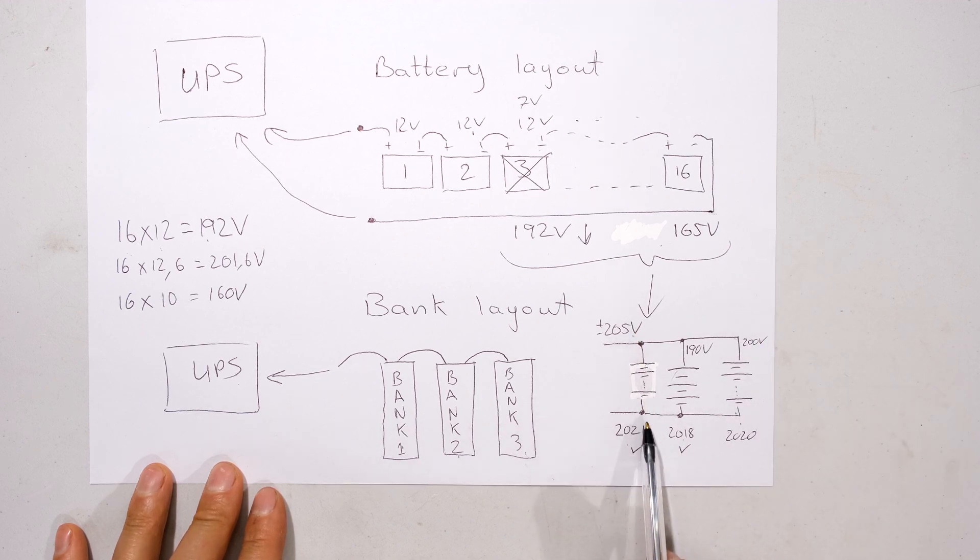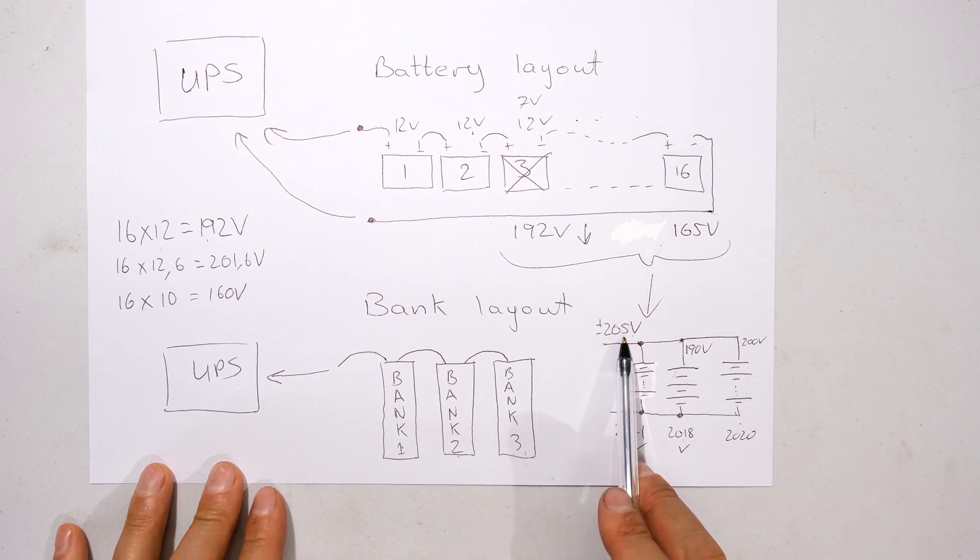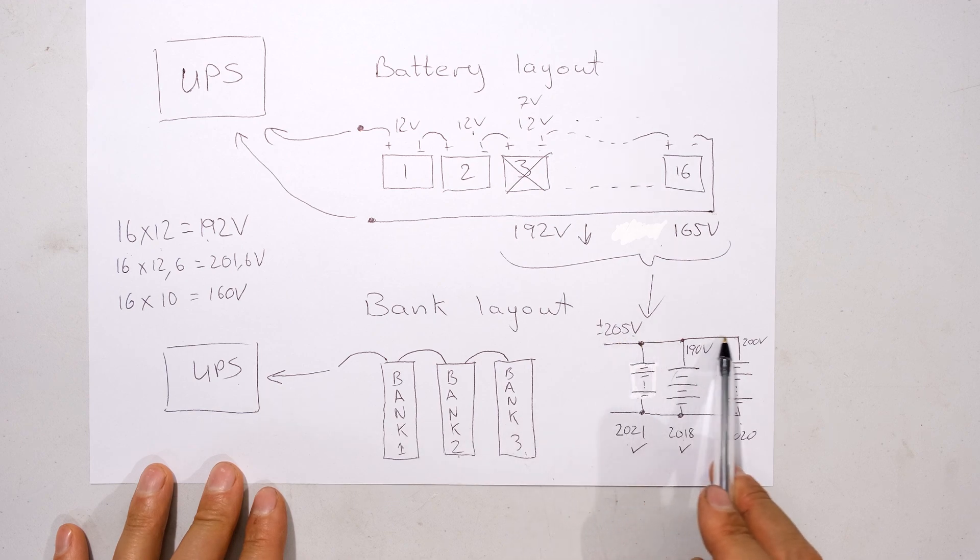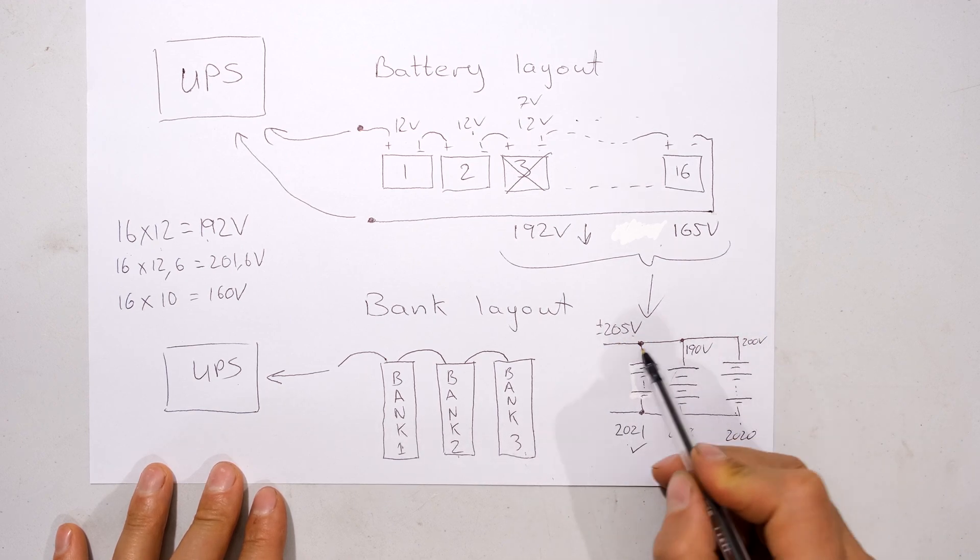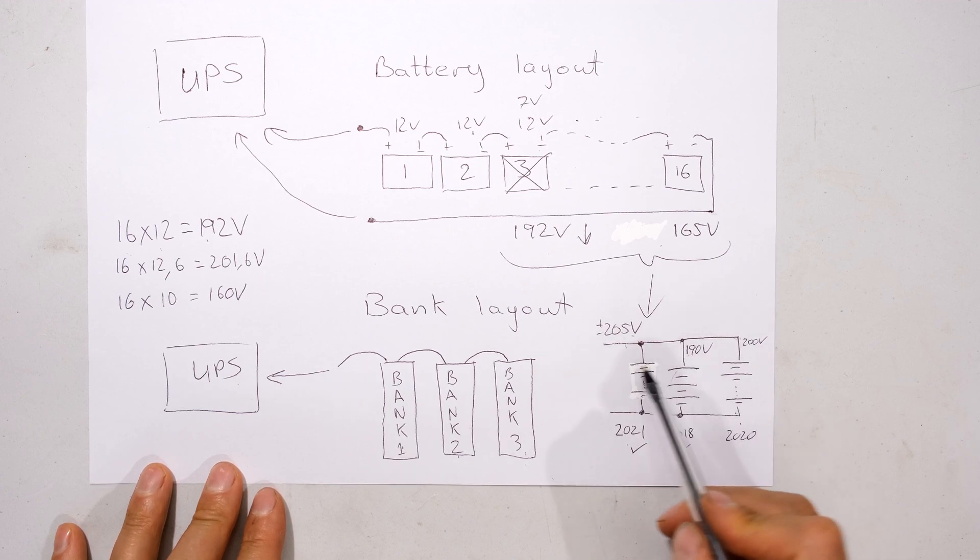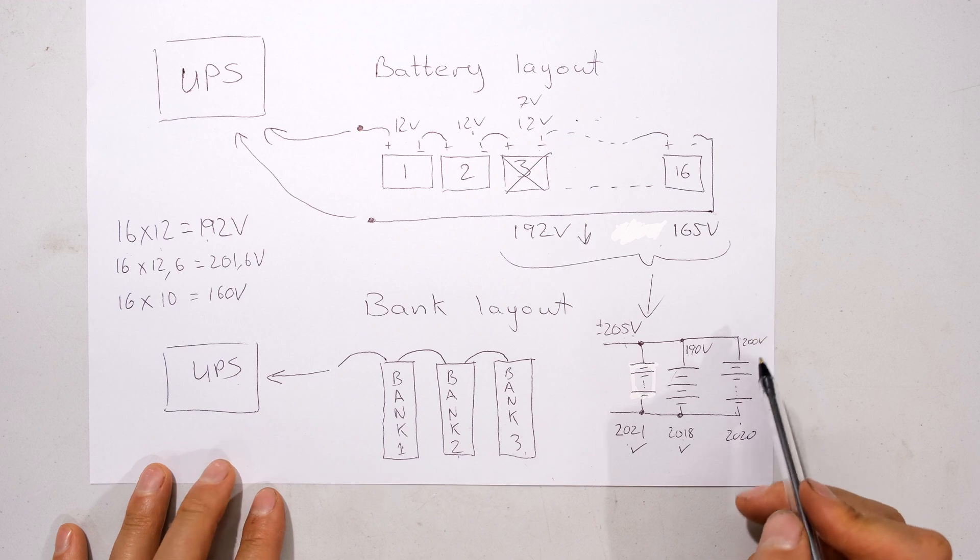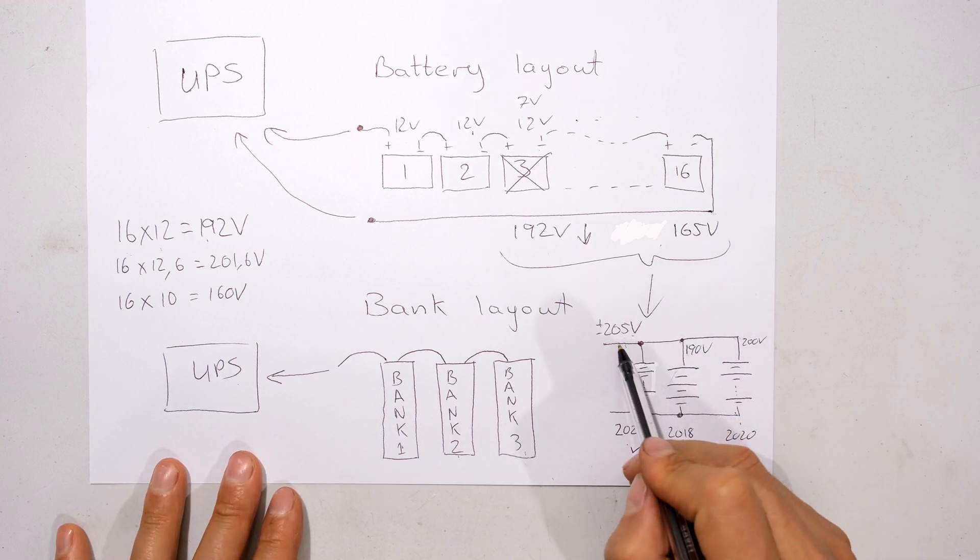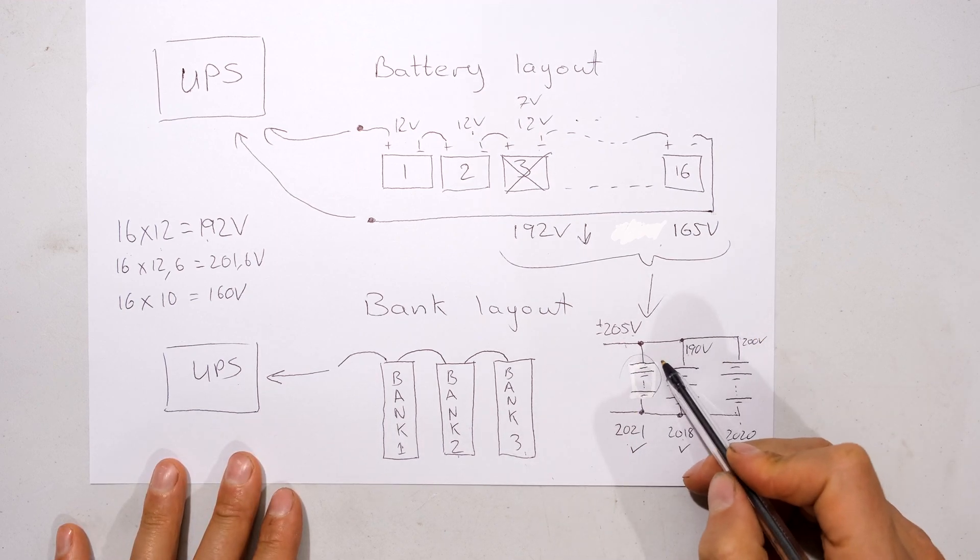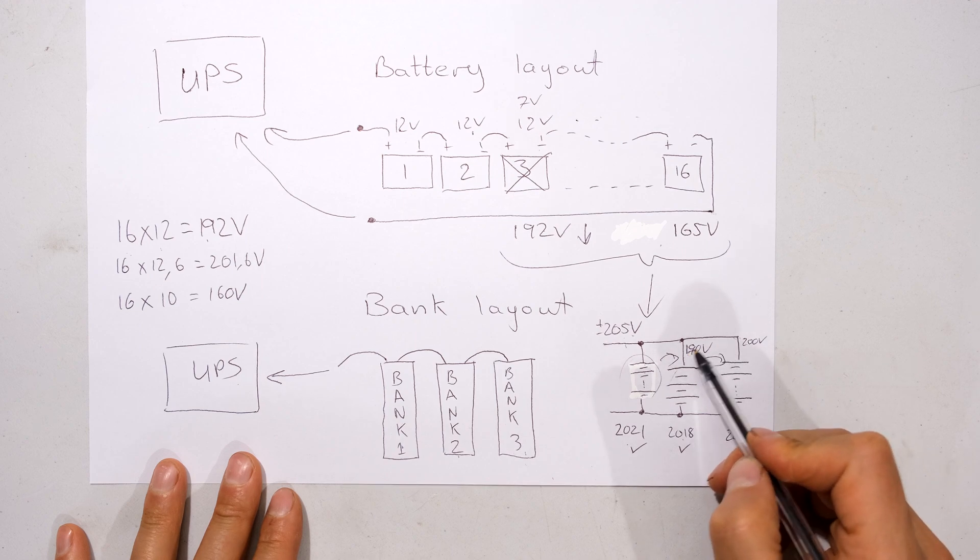Because this is a parallel circuit, you cannot say 200 volts, 190 volts, 205 - no, the voltage there is the same voltage there, the same voltage there. So what ends up happening is you find that the good battery is now compensating for the poorer batteries, now taking the voltage to say 200 volts.